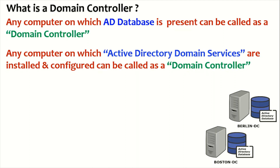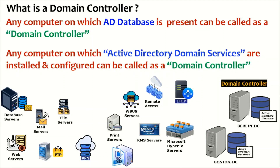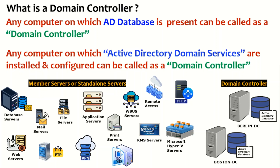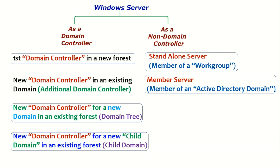We have installed Active Directory Domain Services on these servers and a database has been created — that's why they are called domain controllers. We also have other servers in our infrastructure: database servers, file servers, update servers, DHCP, KMS, DNS, antivirus servers, and backup servers. These are not domain controllers — they are either member servers or standalone servers because they don't host the Active Directory database. There is a very clear distinction between a domain controller and a member server or standalone server.